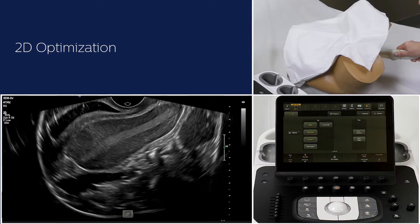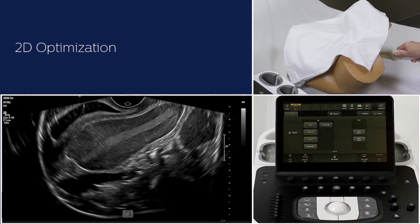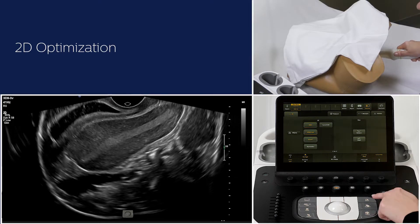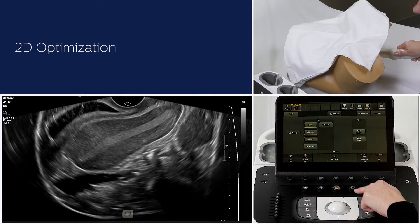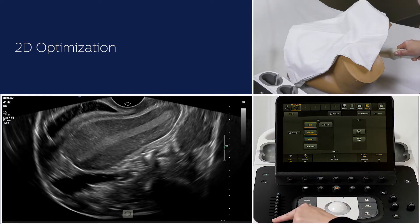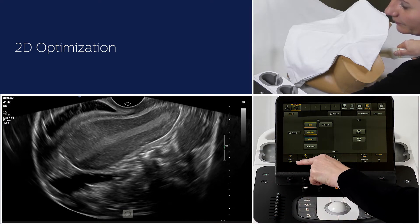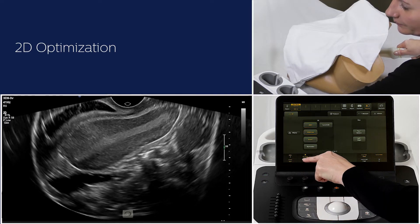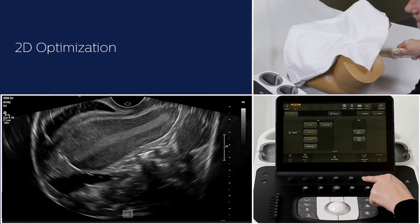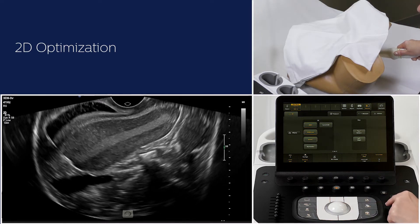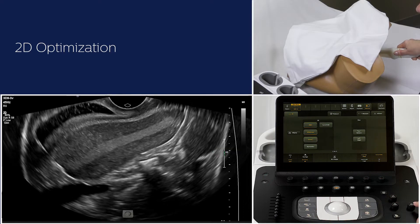First, we need to optimize our 2D image. An optimized 2D image provides a higher resolution 3D data set. We can do this by pressing i-Scan, which optimizes 2D gain and TGC, or adjust settings such as X-RES, 2D Opt, dynamic range, depth and focus.